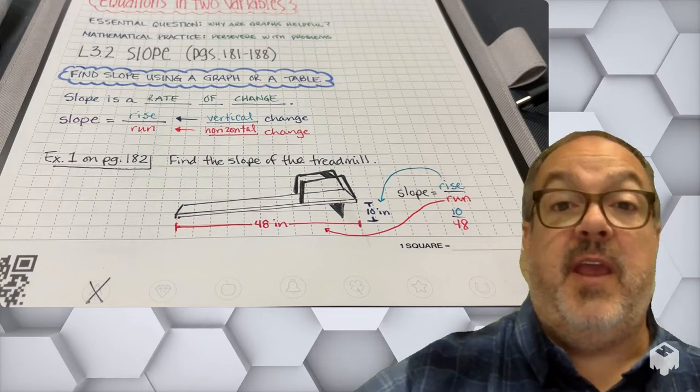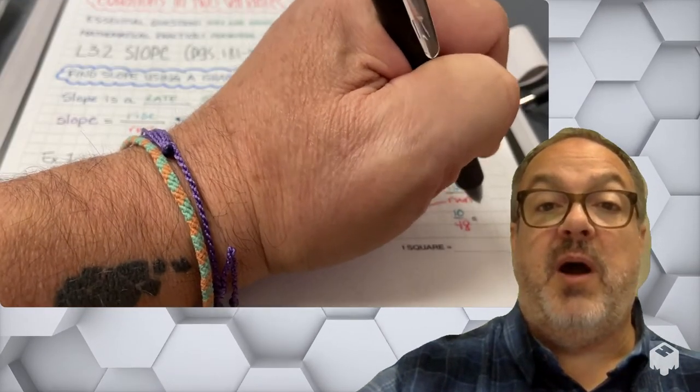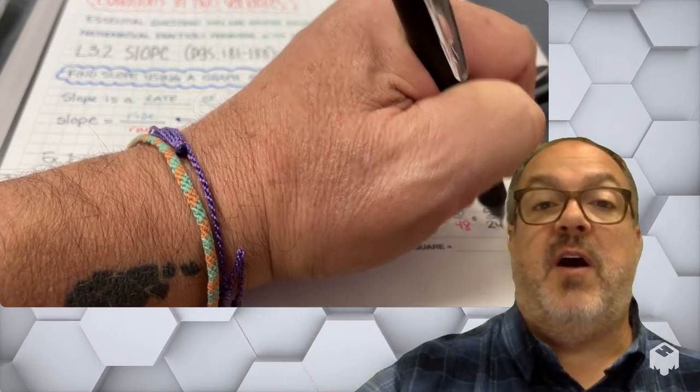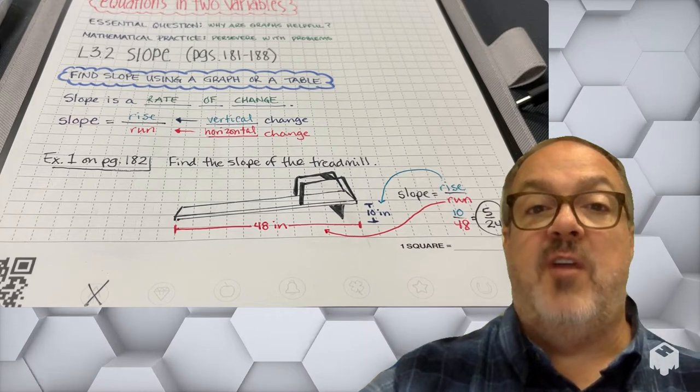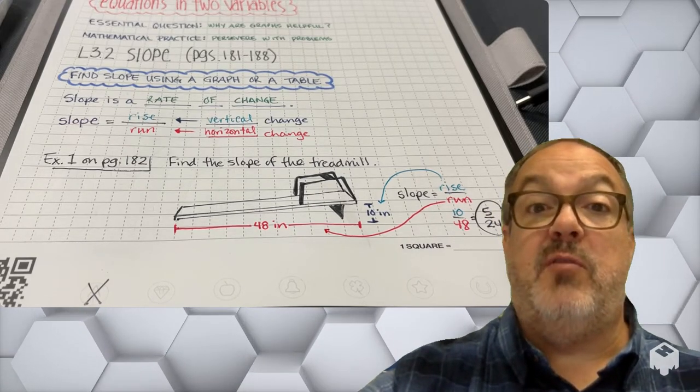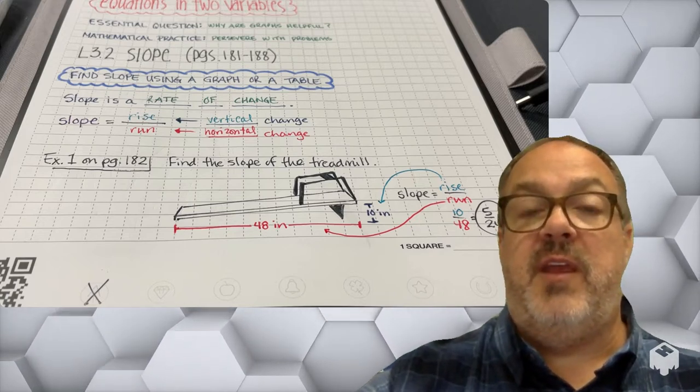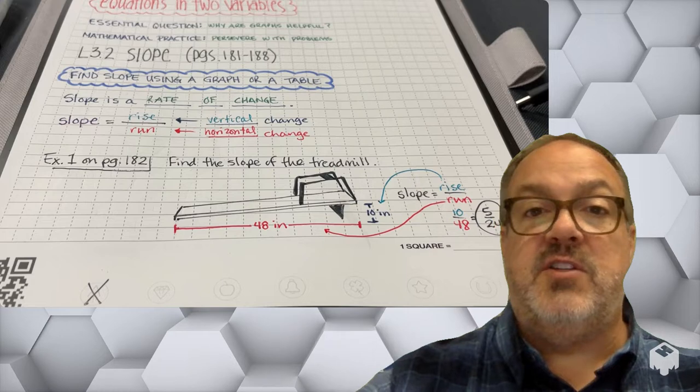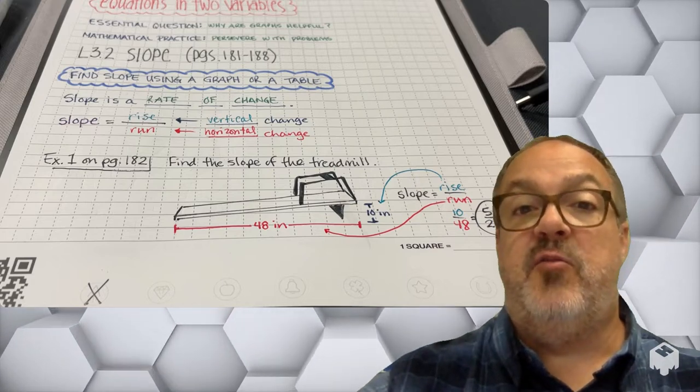But I can simplify that by dividing both 10 and 48 by 2, and I get 5 over 24. So what that means is for every 5 inches that the treadmill goes up in a vertical direction, the change in the x value is going to be 24 inches.